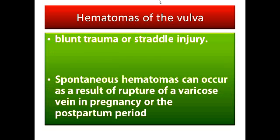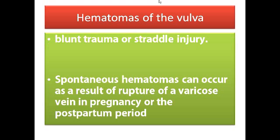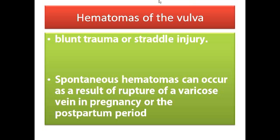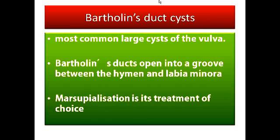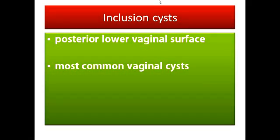Hematomas of the vulva are due to blunt trauma or obstetric injuries. Sometimes these hematomas can occur without injuries and are known as spontaneous hematomas. They result from rupture of a varicose vein in pregnancy or the postpartum period.